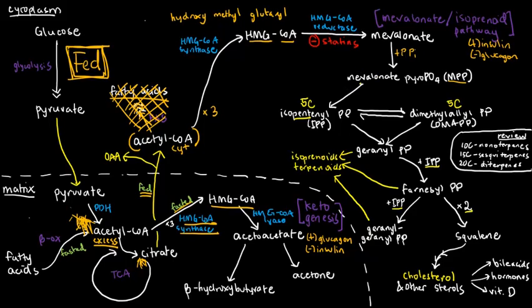Next, mevalonate pyrophosphate can be converted in one step to a molecule called isopentanyl pyrophosphate, or IPP. Basically, based on the prefix pent, we should know that isopentanyl pyrophosphate contains five carbons. Isopentanyl pyrophosphate could actually isomerize into a molecule of dimethylallyl pyrophosphate, or DMAPP, which of course, since it's just an isomer, it also contains five carbons.